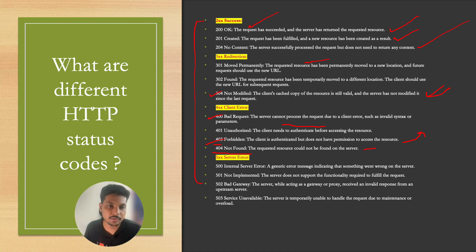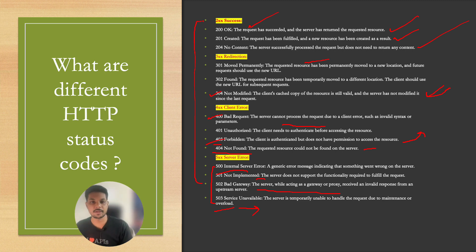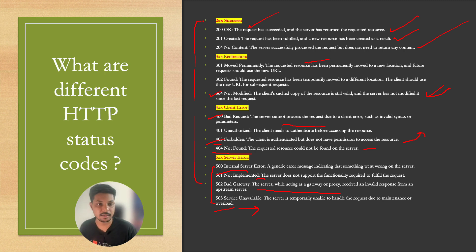The 5xx range covers server errors. 500 Internal Server Error is a generic error indicating something went wrong on the server. 501 Not Implemented means you're accessing functionality not implemented on the server side. 502 Bad Gateway relates to gateway or proxy errors. 503 Service Unavailable means the service is in maintenance or still being deployed. These are the status codes you should go through as they are very commonly asked in interviews. Hope you liked the video — if you like the content, please like, comment, share, and subscribe. See you in the next video, thanks, bye!